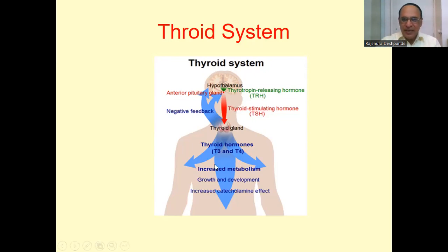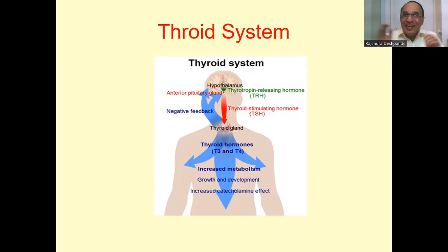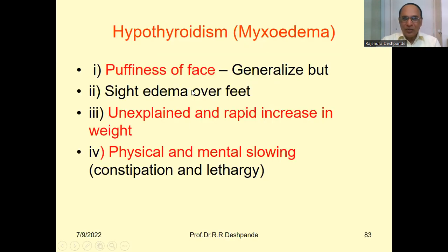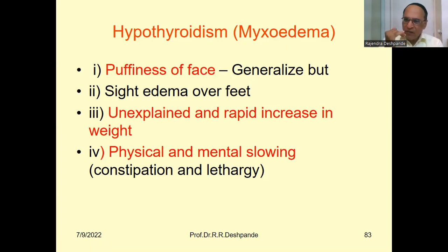T3 and T4 hormones are basically related to the basal metabolic rate of the body — anabolism and catabolism together constitute metabolism. Anabolism is nutrition or building up; catabolism is degeneration or breaking down. A lot of heat is generated during the metabolic process, along with growth, development, and increased catecholamine effects. Today's topic is hypothyroidism, also called myxedema — meaning low functioning of T3 and T4.